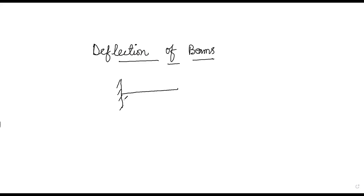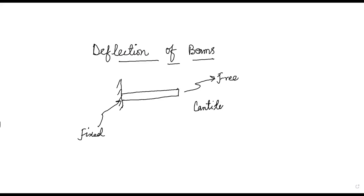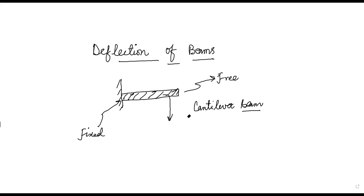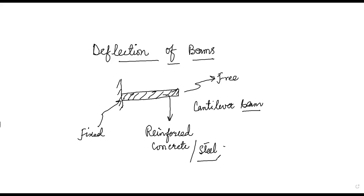Consider a beam which is fixed at one end and free at another end. This is known as a cantilever beam. This beam is made of some material — maybe reinforced concrete or steel. The span of the beam will have some weight W, and on account of this weight and gravitational force, the beam has a tendency to move downward.